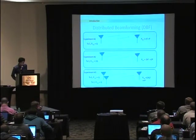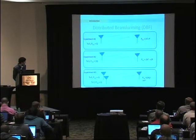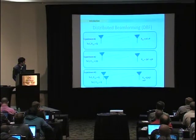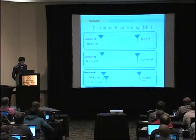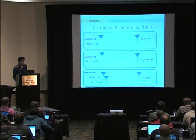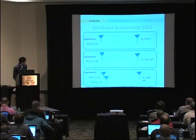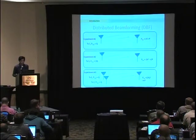In a third experiment, there are two transmitters and one receiver, both transmitting with the same power as in experiment one. When the two signals are aligned, the sum signal at the receiver becomes twice in magnitude, and correspondingly the received power becomes four times. We can generalize: if we have N such transmitters, the received power at the receiver becomes N-squared times greater. That is the gain in energy efficiency we get from distributed beamforming.